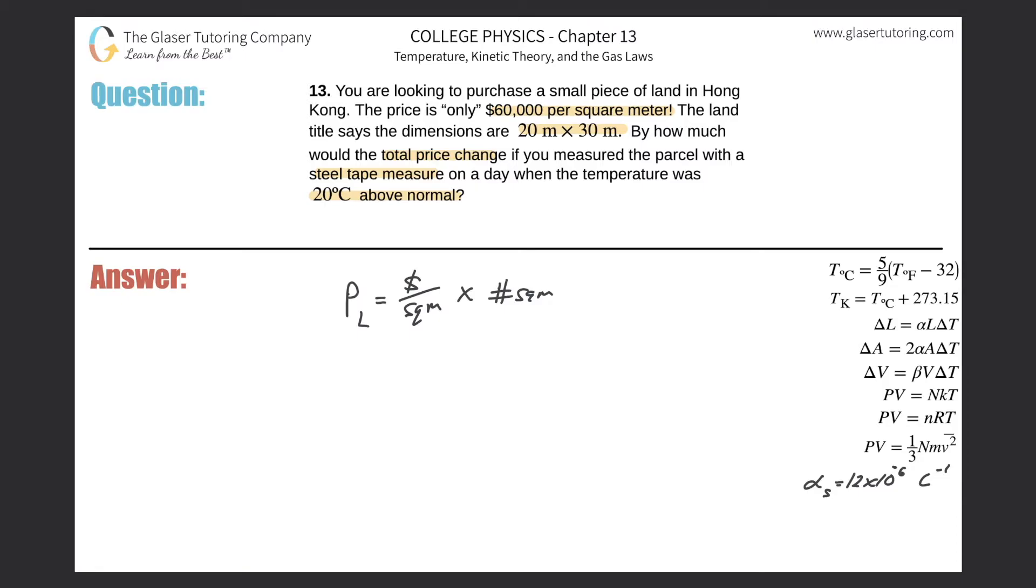The change in the price of the piece of land, I'll put a little delta there, will be equal to which of the two variables are changing. Well, the price per square meter is going to stay the same at $60,000 per square meter. It's the number of square meters that may change because the tape measure is under a higher temperature.